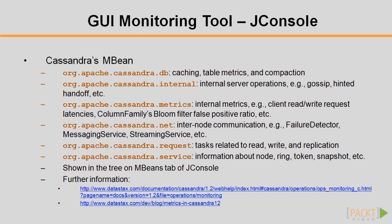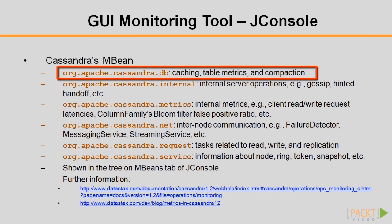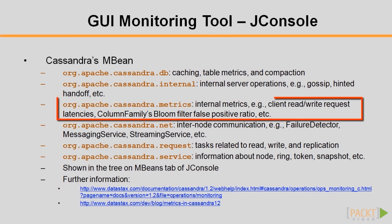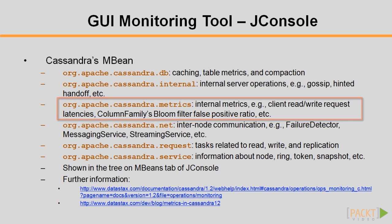Before we look into this tab, let's learn about Cassandra's MBeans first. Cassandra provides a few MBean packages to allow you to issue operations and monitor its metrics. The DB package focuses on caching, table metrics, and compaction. Then the internal package for internal server operations such as gossip and hinted handoff. The metrics package provides internal metrics such as client read-write request latencies and column families bloom filter false positive ratio, and so on.